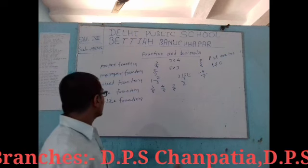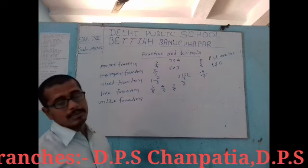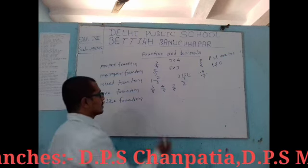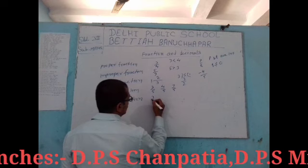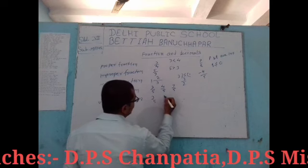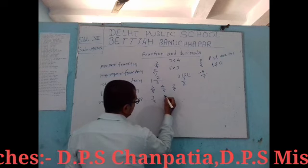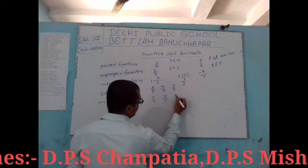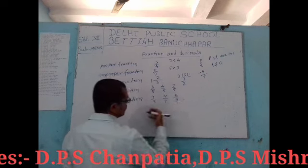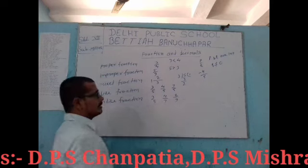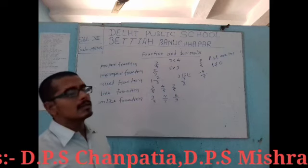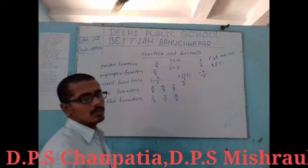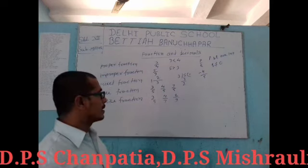If the denominators are not the same, that type of fraction is called an unlike fraction. For example, 3 by 5, 4 by 7, and 8 by 9 — the denominators are not the same. Such fractions are called unlike fractions.